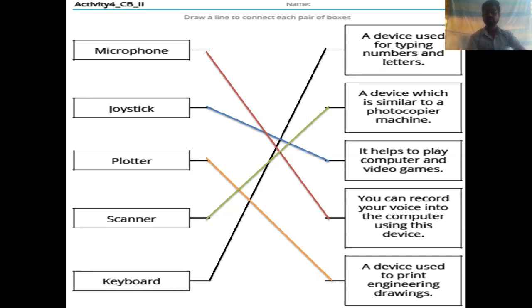Joystick. Joystick helps to play computer and video games. With the help of joystick you can play video games and computer games. Plotter. With the help of plotter you can print engineering drawings, a big drawing.